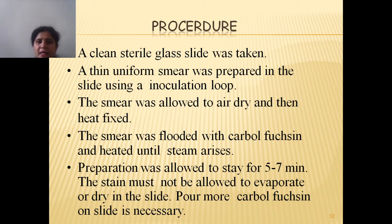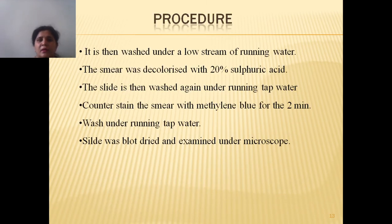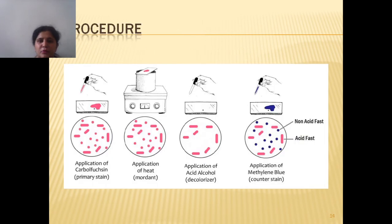The procedure for acid-fast staining: take a clean, sterile, grease-free slide, then make a thin uniform smear of the bacteria using the inoculation loop. Allow the smear to dry and heat-fix it. Flood the smear with the primary stain carbol fuchsin and heat it until steam arises. Allow the preparation to stay for 5 to 7 minutes — the stain must not be allowed to evaporate or dry on the slide; add more carbol fuchsin if necessary. Then wash the slide under a low stream of running water, decolorize the smear with 20% sulfuric acid, wash again under running tap water, and apply the counter stain methylene blue for 2 minutes. Wash under running tap water, air dry the slide, and examine under the microscope.